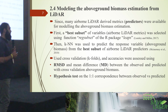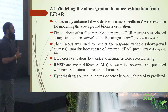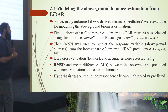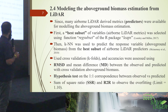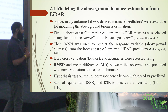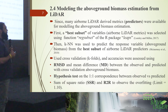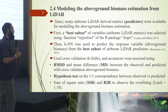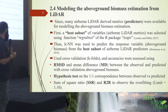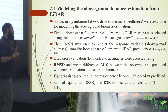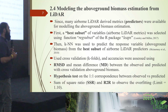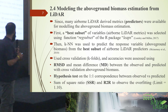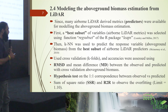We also used hypothesis tests on the one-to-one correspondence between the predicted and observed values to find this correspondence analytically rather than visually. We used the sum-of-squares ratio (SSR) and R-to-R ratio. SSR and R-to-R were used to ensure models are not overfitted, with a limit of 1.1 — if values are below 1.1, the models are not overfitted.